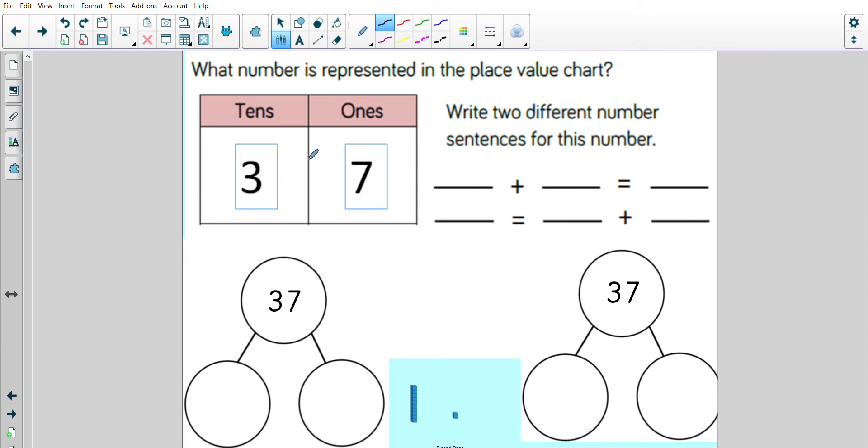Here we have a larger number. What number is represented in the place value chart? It's made up of 3 tens and 7 ones. What number do you think it is? That's right, the number is 37. It's made up of 3 tens and 7 ones.